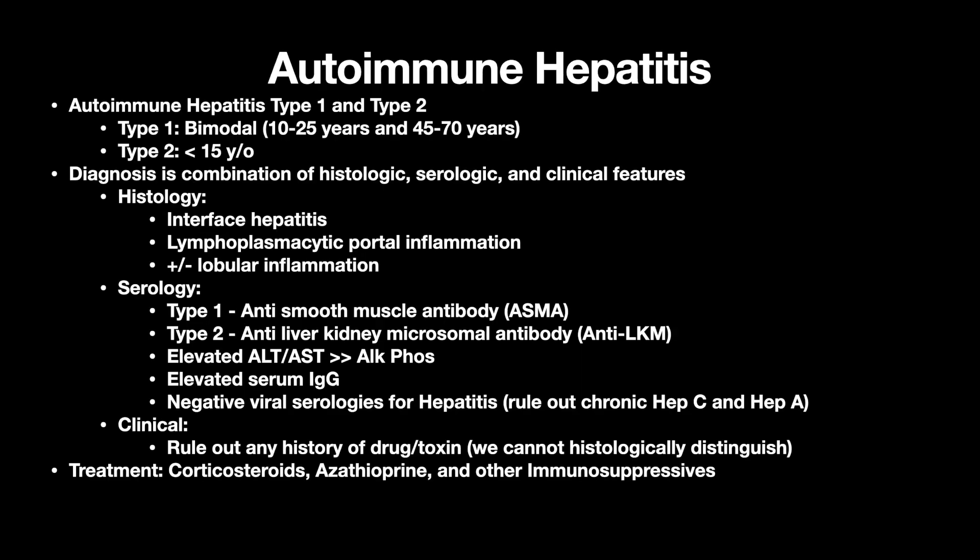A little bit about autoimmune hepatitis. There are two types. Type 1 is bimodal, from 10 to 25 years and 45 to 70 years, and type 2 is very young patients, less than 15 years old generally. Diagnosis is a combination of various histologic, serologic, and clinical features.